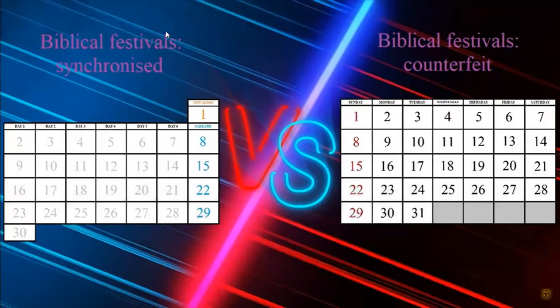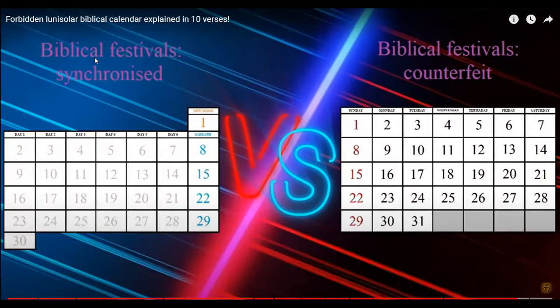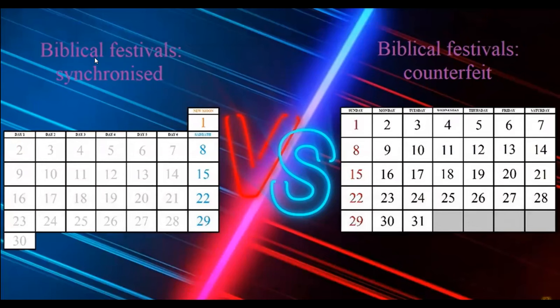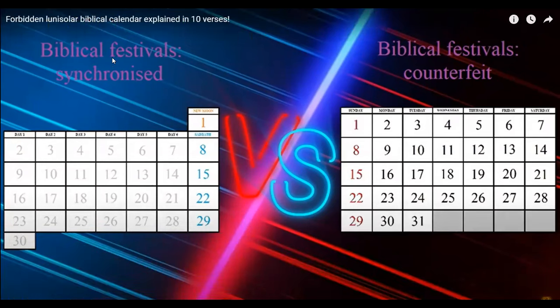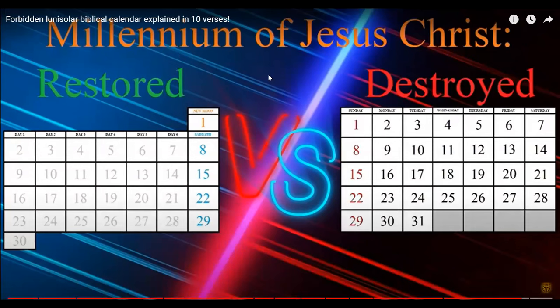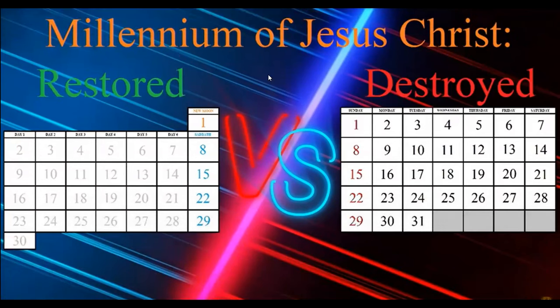The seven biblical festivals are well synchronized with the lunisolar calendar, but on the Gregorian they cannot be tracked. The last reason why you should reject Gregorian calendar is that this calendar will be completely destroyed in the millennium of Jesus Christ while lunisolar will be restored. There will not be two different calendars in God's kingdom. Make your decision today which one you want to follow, preach and defend. Muslims have Friday, Jews have Saturday, and Catholics have Sunday, but born-again Christians have the truth from the Holy Bible.